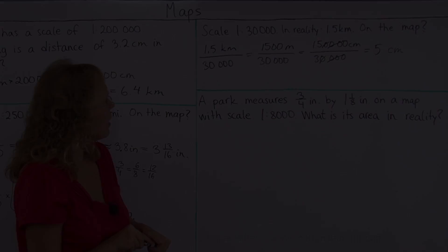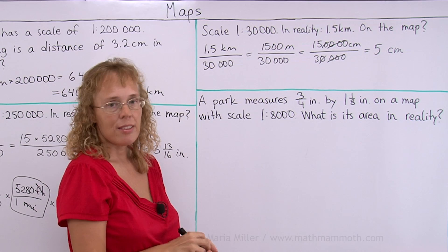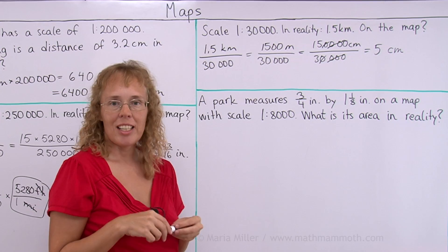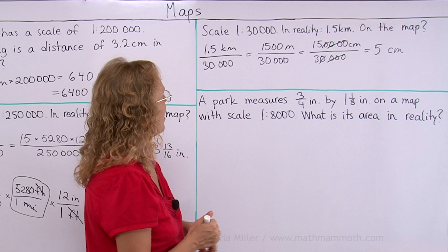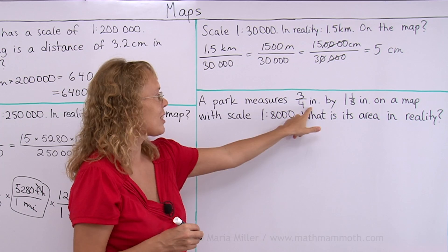Lastly, a park measures 3 fourths of an inch by 1 and 1 eighth of an inch on a map with scale 1 to 8,000. What is its area in reality? This is a rectangular park. And so to calculate its area, we of course need to find its length and width in reality and multiply those two. We are going from the map to reality. So now we multiply. We need to make this longer or bigger. 3 fourths of an inch times 8,000.